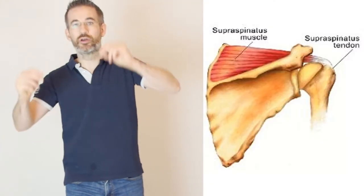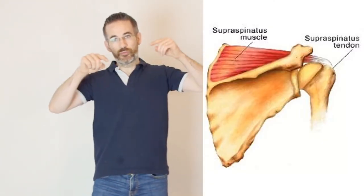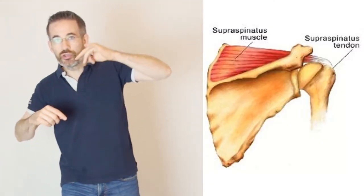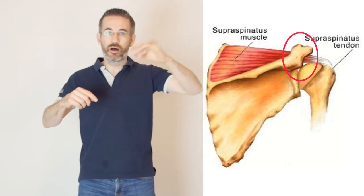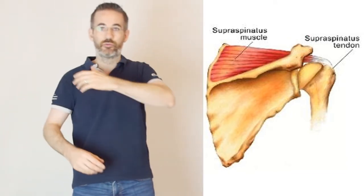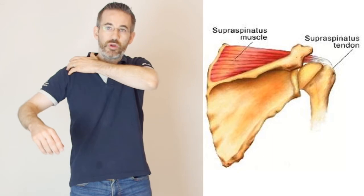Reason number two is if we look at the tendon of the supraspinatus, we observe that it goes under a bony arch which is formed by the shoulder blade, and the more you raise the humerus...